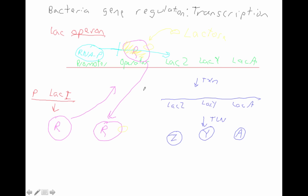Bacteria are very efficient organisms — when you don't need to turn on a gene, they quickly turn it off to conserve energy because they have no idea what the environment is going to throw at them next. Well, that ends our podcast for the first objective for this chapter. On the next podcast we'll focus on eukaryotic gene regulation — not surprisingly, it's a little bit more complicated, but we'll get to that in the next podcast. If you have any questions, let us know. See you in class.